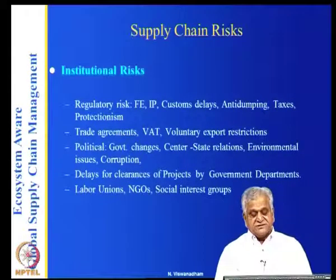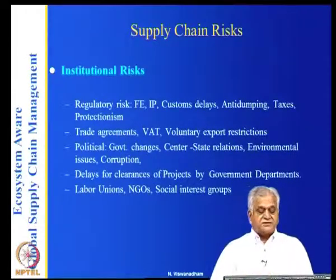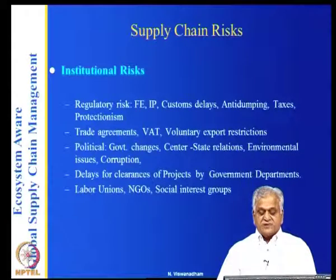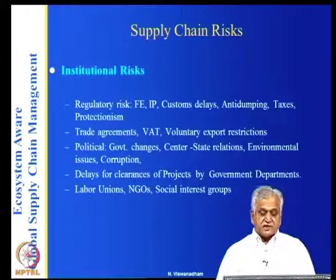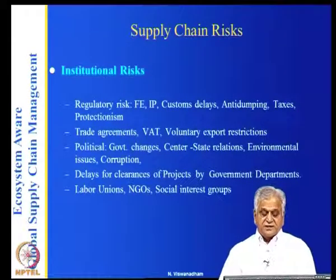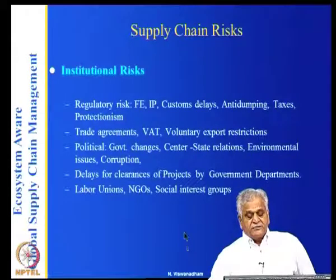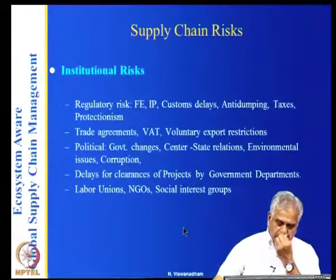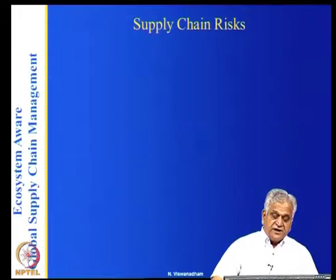Delays in project clearance by government departments are also a risk — for example, building a factory requires land acquisition from farmers, satisfying them with fair prices, involving multiple government agencies, which can cause long delays. Labor unions, NGOs, and social interest groups also create risk — for example, protests against a nuclear power plant. So institutions including governments, industry groups, and social groups all create supply chain risk.